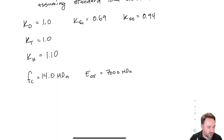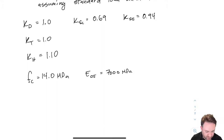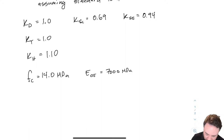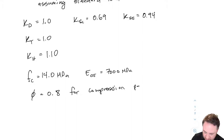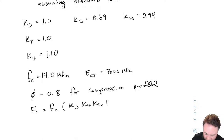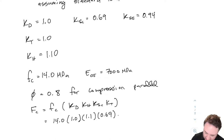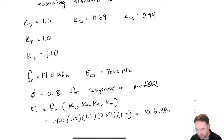Now we have all our modification factors and strengths. We can calculate capital Fc, which we'll use throughout. Phi equals 0.8 for compression parallel, and Fc equals fc × kd × kh × ksc × kt = 14.0 × 1.0 × 1.1 × 0.69 × 1.0 = 10.6 MPa. That value will come into all of our calculations.